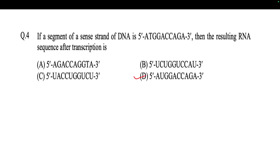To identify the correct mRNA sequence from given options: the mRNA sequence should always be identical to the sense (coding) strand, running 5' to 3', with uracil replacing thymine. Do not confuse it with the template (antisense) strand. If a sequence looks identical to the antisense strand, it is not the correct mRNA sequence — the mRNA is identical to the coding strand, not the template strand.